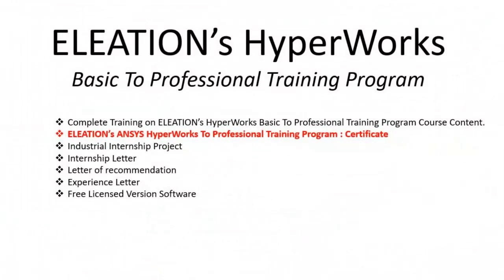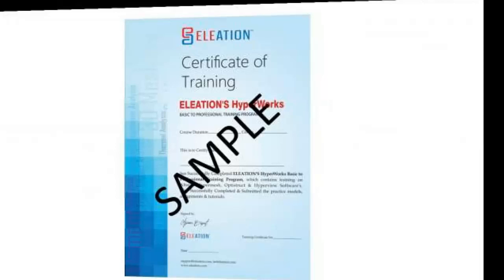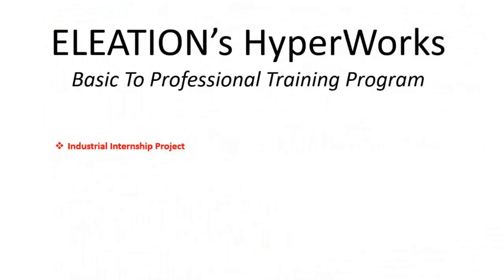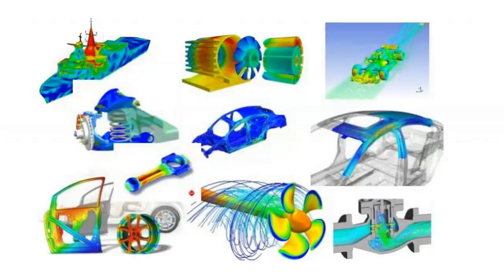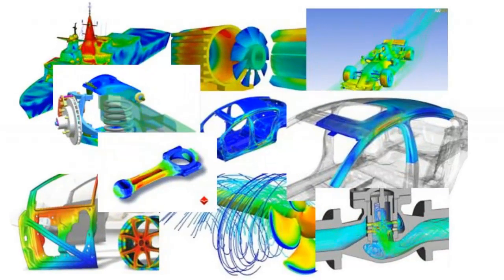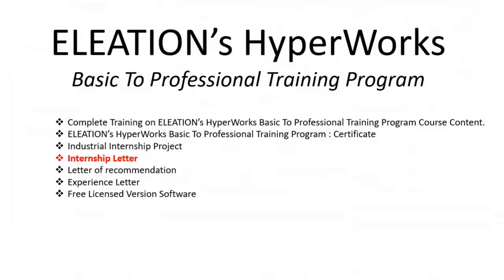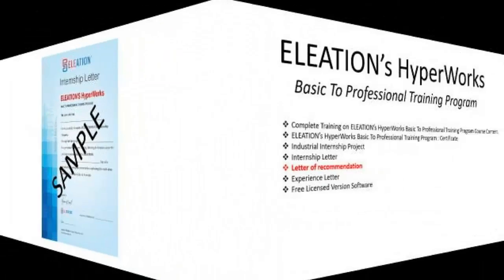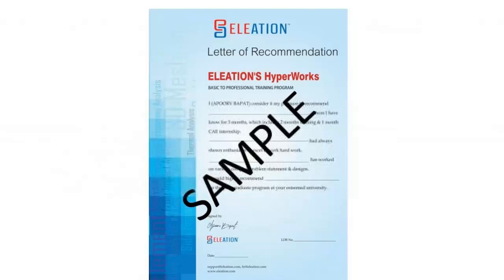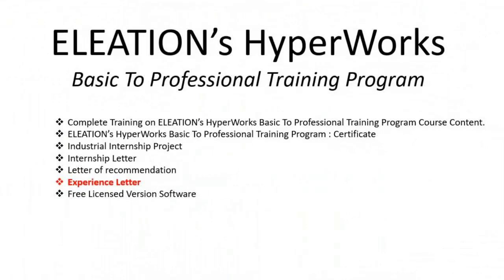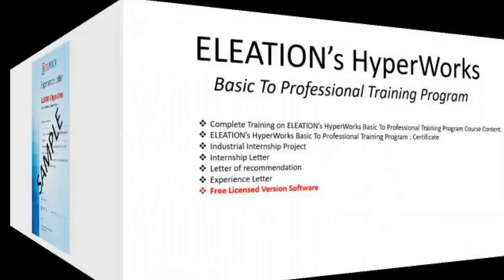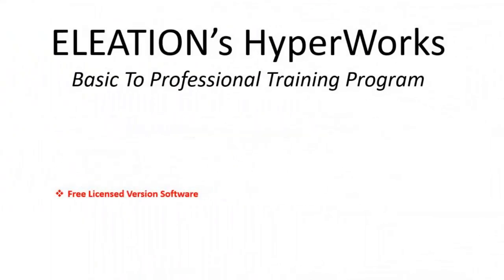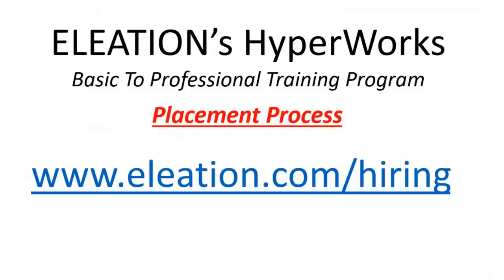All participants will receive Eleation's Hyperworks Basic to Professional Training Program Certificate, an Industrial Internship Project on CAE which you can download, solve, and submit the report for, an Internship Letter, a Letter of Recommendation, an Experience Letter, and a Free License Version of the Software. To know Eleation's Placement Process, please visit www.eleation.com/hiring.